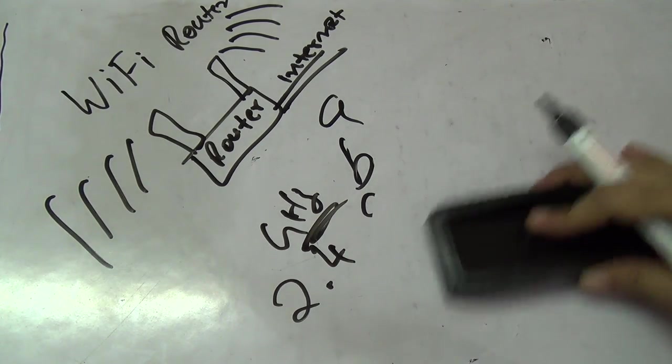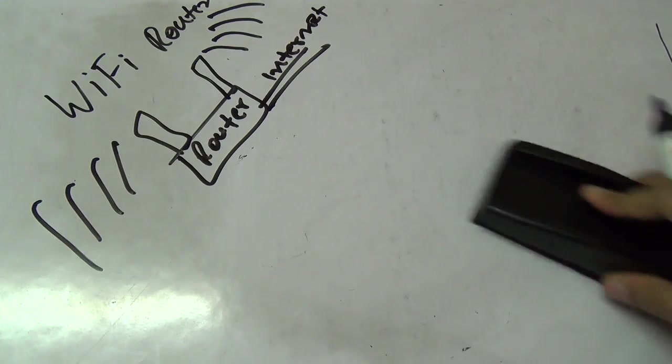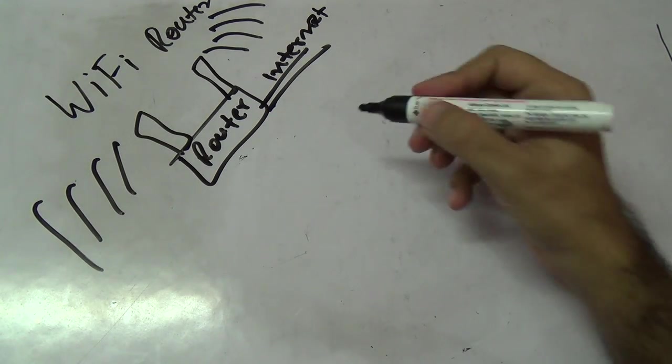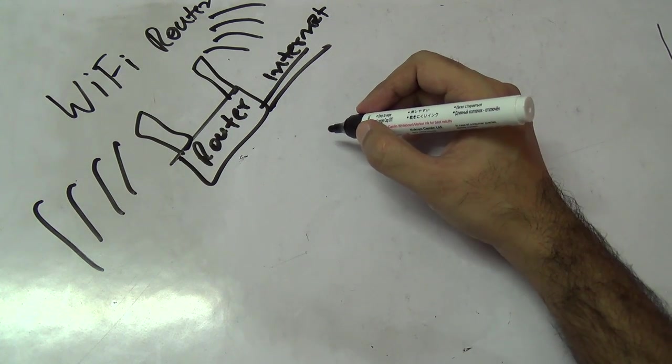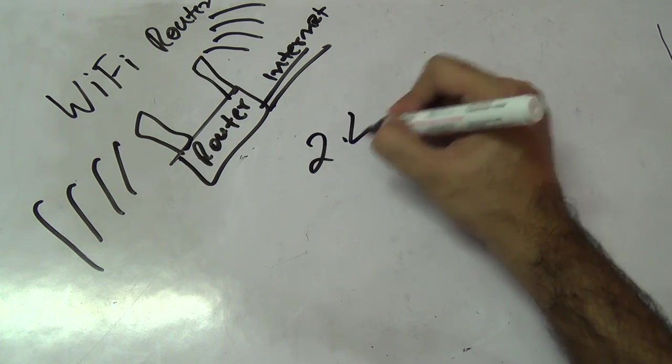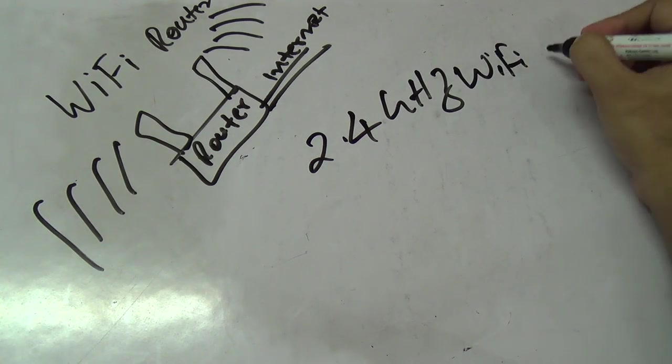So what do I suggest? If you're just a casual user, have about three or four devices in your house, and your internet connection is not very fast, like 20 megabit or 50 megabits, a 2.4 gigahertz based Wi-Fi router should be good enough for you.